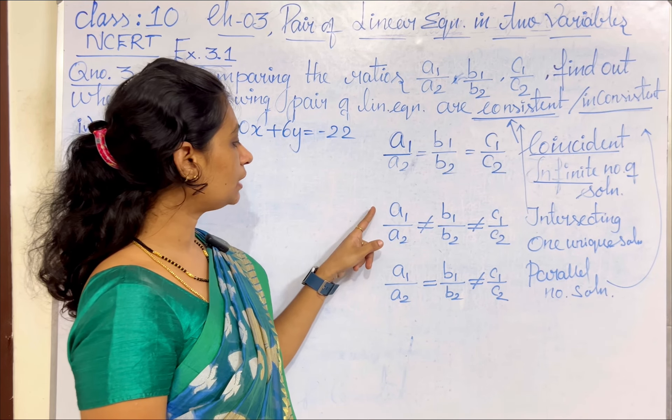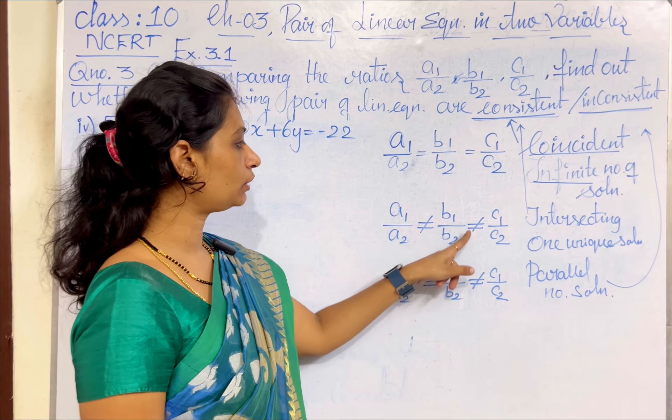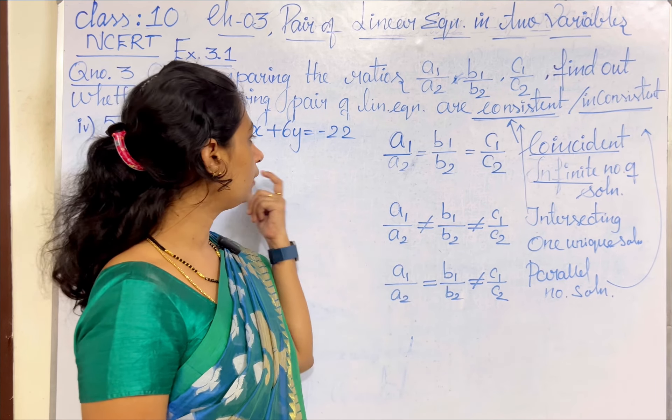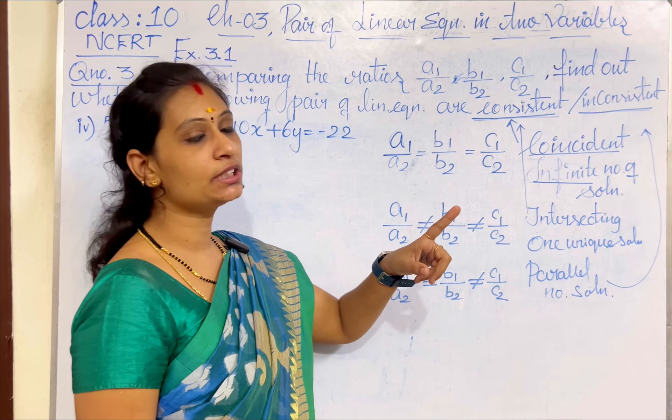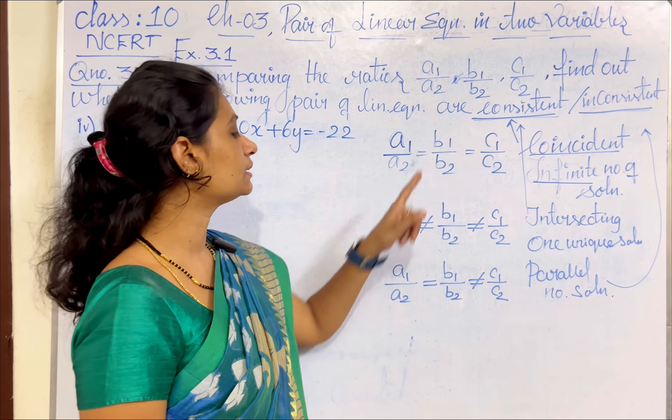The second case: if A1 by A2 not equal to B1 by B2 not equal to C1 by C2, the given pairs of equations form an intersecting graph. They have one unique solution, it also comes under consistent.